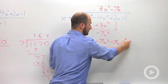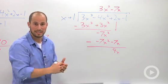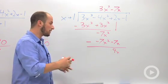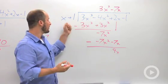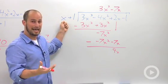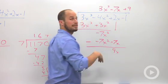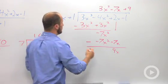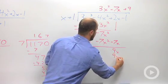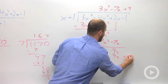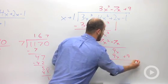And again, we can bring this 1 down if we want. We don't need to. Just remember it's there. So this 9x is the last thing we need to get rid of. In order to get 9x from x, we need a 9. Plus 9. That 9 gets distributed through: 9x plus 9. And once again, we subtract.